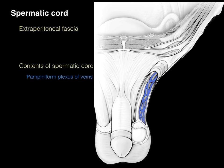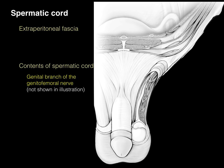The ilioinguinal nerve runs between the transversus abdominis and internal oblique, goes through the inguinal canal and into the spermatic cord. Note that it does not enter the deep inguinal ring, but it does enter the inguinal canal and exits through the superficial inguinal ring.